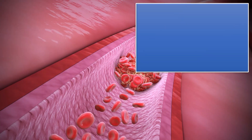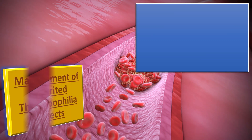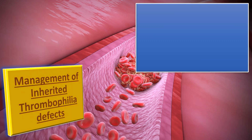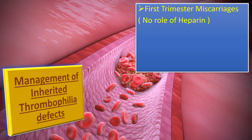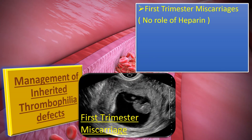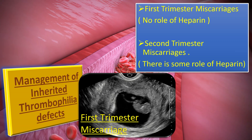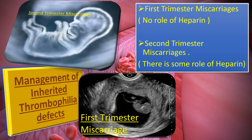Regarding the management of inherited thrombophilic defects and the role of heparin: there is insufficient evidence to evaluate the effect of heparin in pregnancy to prevent miscarriage in women with recurrent first trimester miscarriage associated with inherited thrombophilia. However, heparin therapy during pregnancy may improve the live birth rate of women with a second trimester miscarriage associated with inherited thrombophilias.